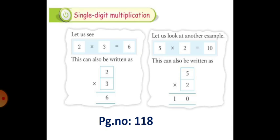Next, let us look at another example. 5, 2's are 10. So this can also be written as 5 into 2 is equal to 10.